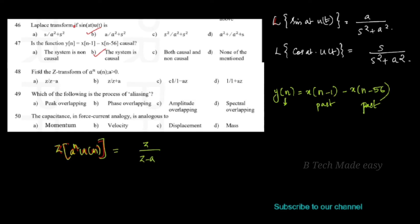Next question: Aliasing is the process of what? Options are peak overlapping, phase overlapping, amplitude overlapping, or spectral overlapping. Aliasing is the process of spectral overlapping.